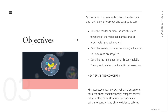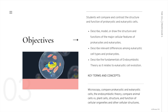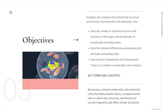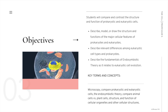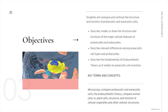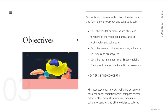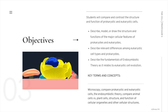After this lesson, you will be able to compare and contrast the structure and function of prokaryotic and eukaryotic cells, describe, model, or draw the structure and functions of the major cell features of both prokaryotes and eukaryotes, describe relevant differences among eukaryotic cell types and prokaryotic cell types, and describe fundamentals of the endosymbiont theory as it relates to eukaryotic cell evolution.